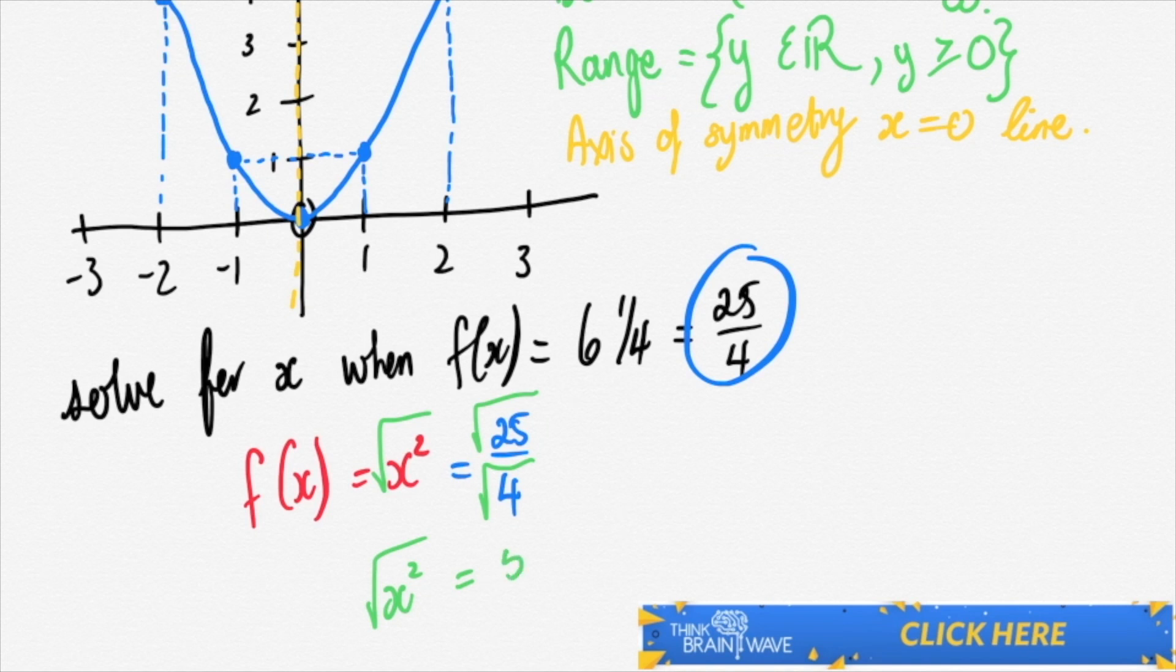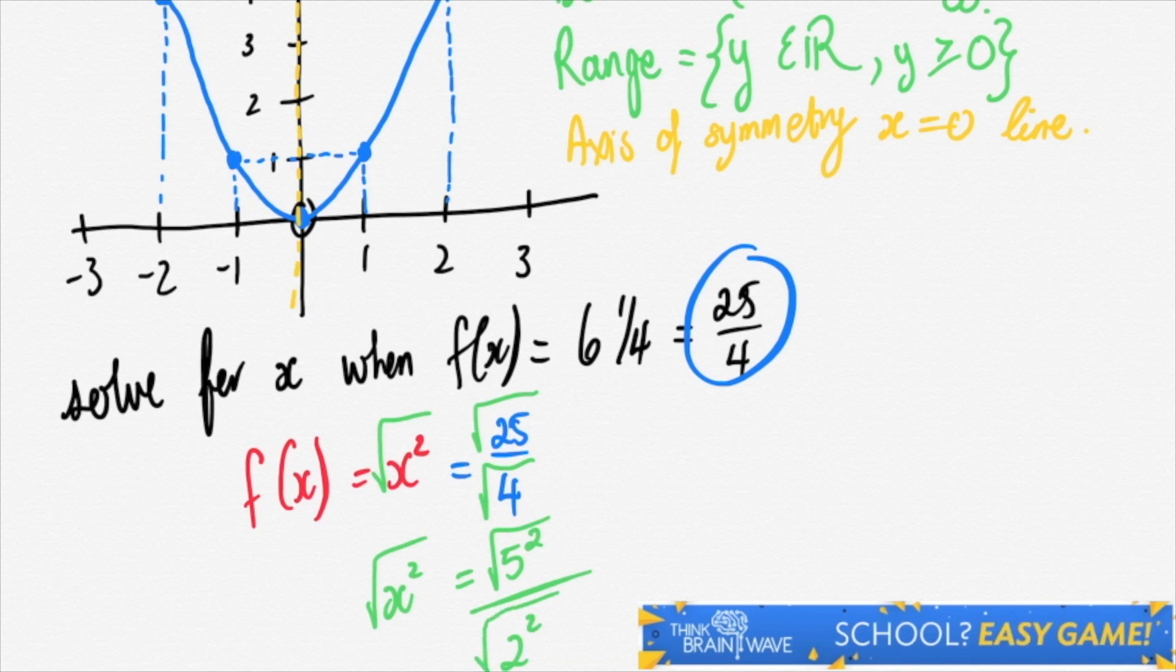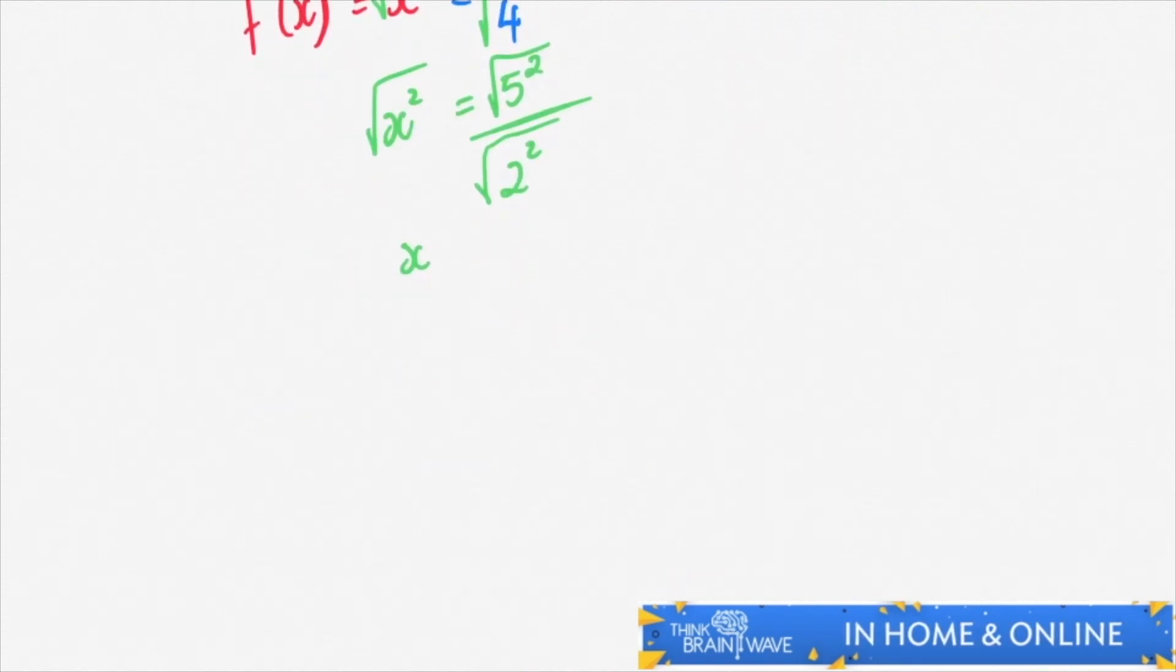Let's rewrite this nice and neatly. We have 5 squared with a square root sign because 5 squared is 25. 2 squared is 4, and we put our square root sign on top.